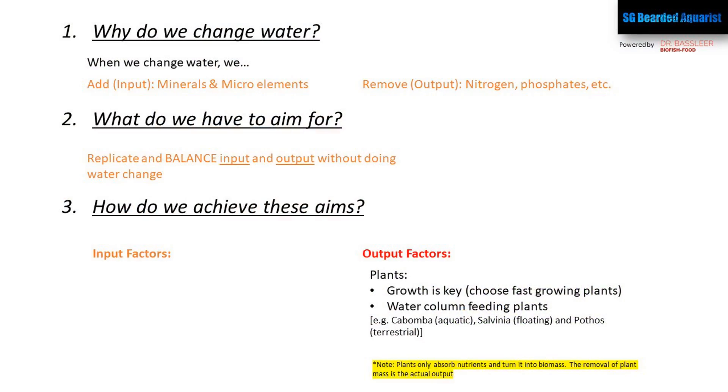There's one important thing to know: remember input and output. When you grow plants, there is zero output — the output only comes when you actually trim the plants and remove that biomass. That is how you're removing nitrogen from the aquarium. You cannot escape that step. It might take weeks, months, or even years — for my situation it will probably be every few months. I go in, cut out all the kabomba, remove the floating plants, and the cycle restarts.